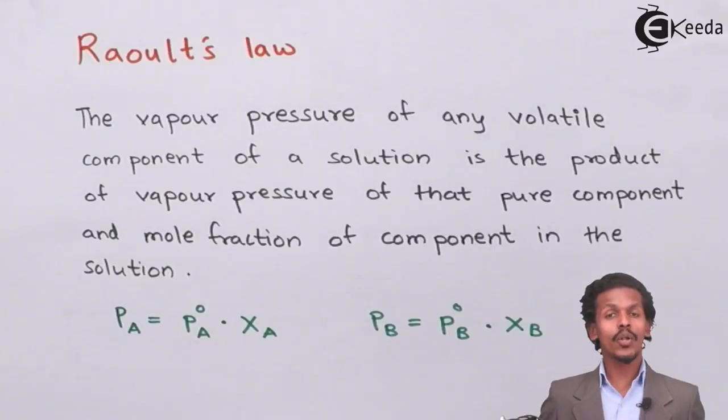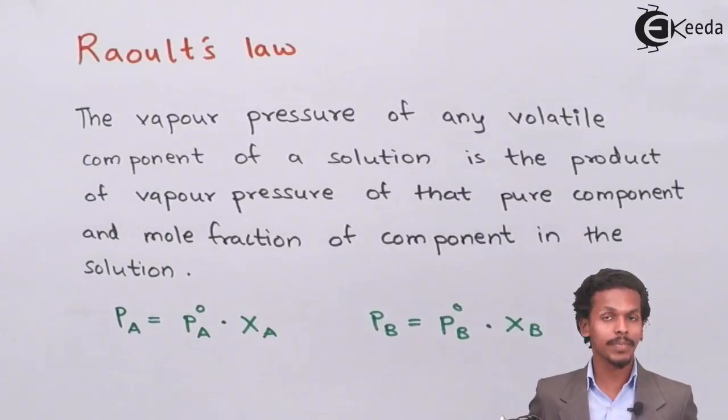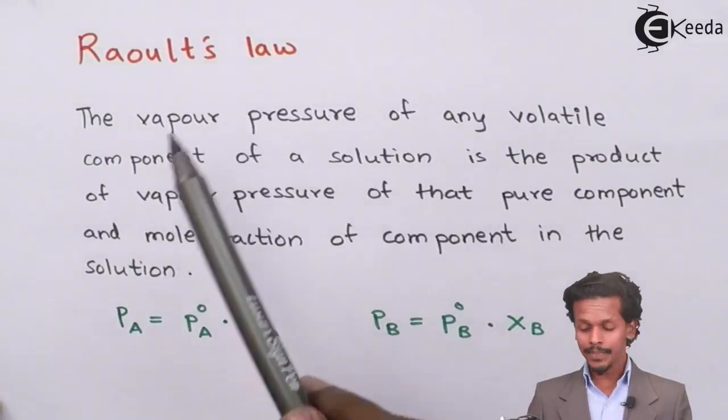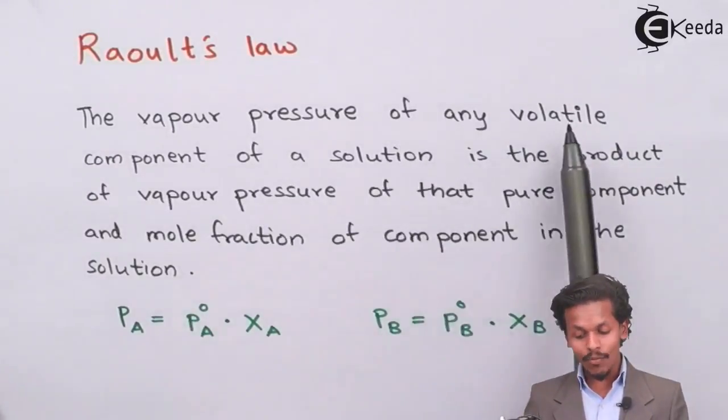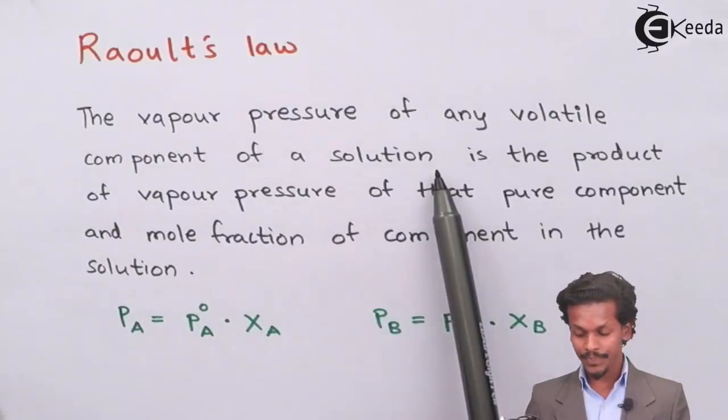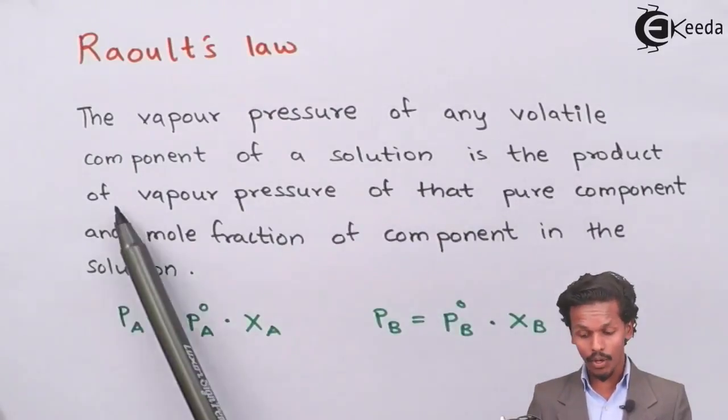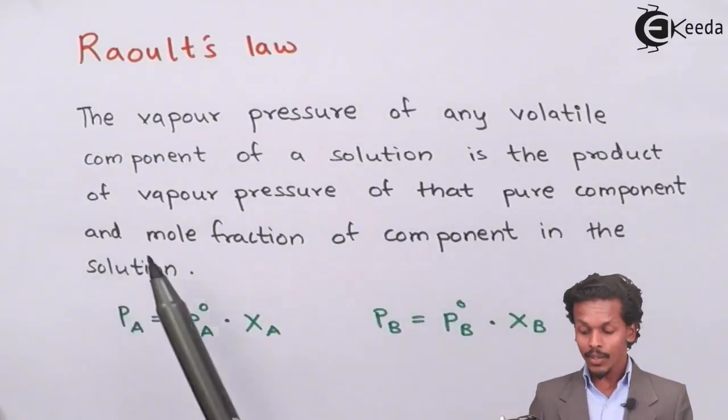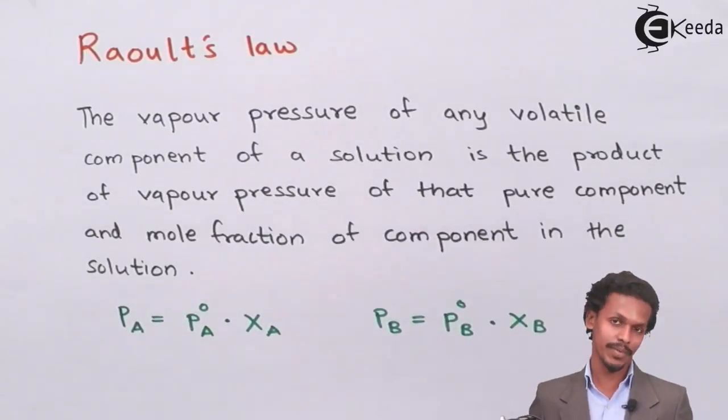Raoult's law is based on vapor pressure. It says the vapor pressure of any volatile component of a solution is the product of vapor pressure of that pure component and mole fraction of that component in the solution.